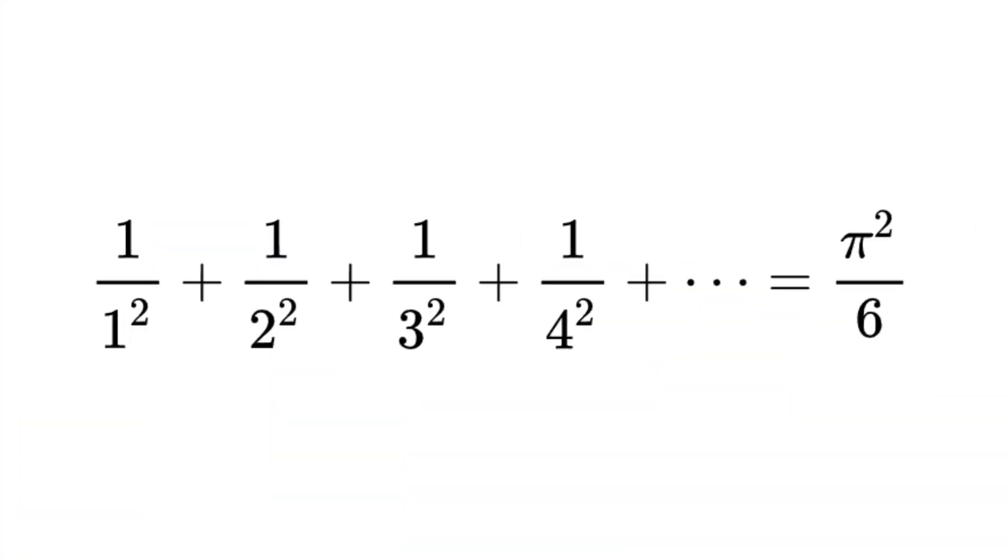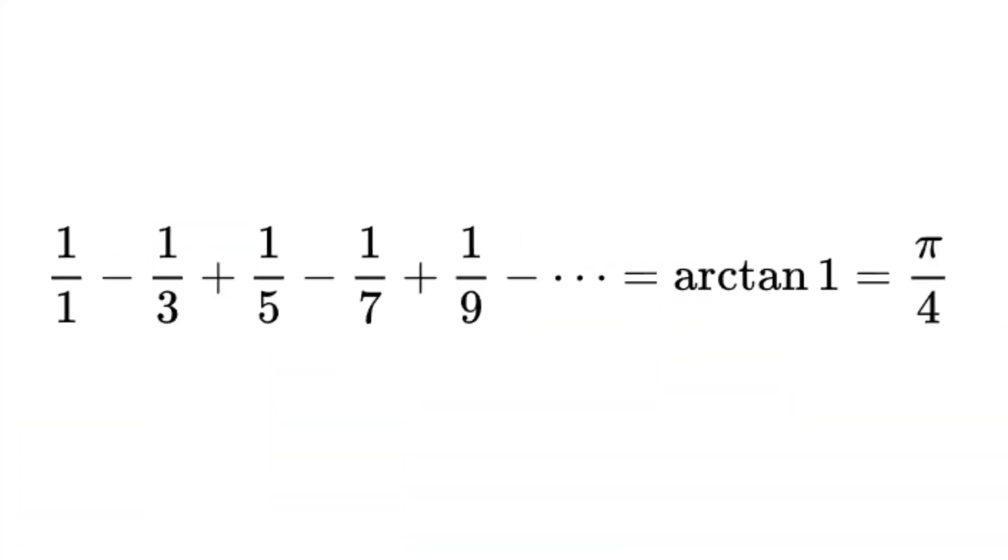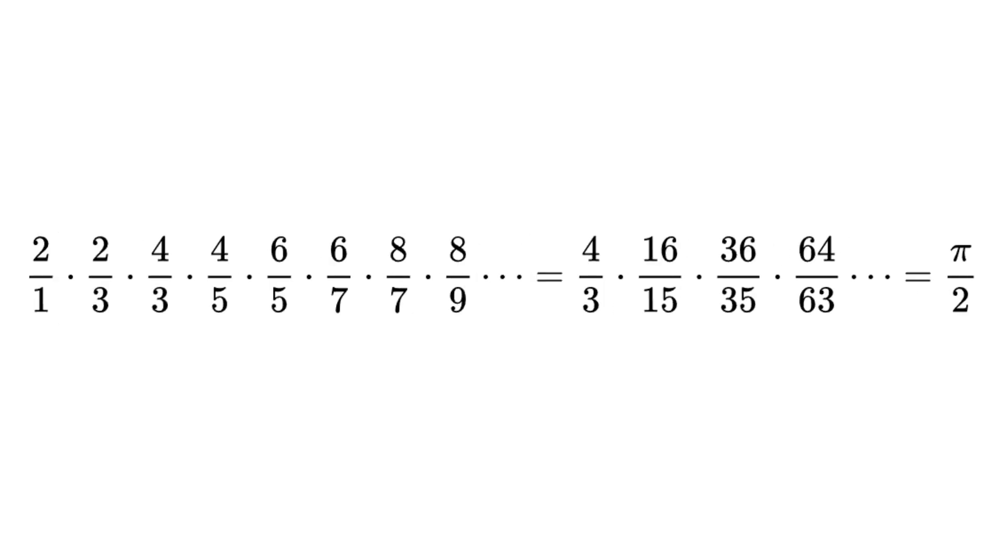And this is also something that 3Blue1Brown has done a lot of videos on, and all of them are between 20 and 30 minutes. So even for the ones I can understand, there's no way I can get through it in this one video. Like explaining why this series equals pi squared over 6, or why this alternating sum of odd reciprocals equals pi over 4, or why something known as the Wallace product equals pi over 2.